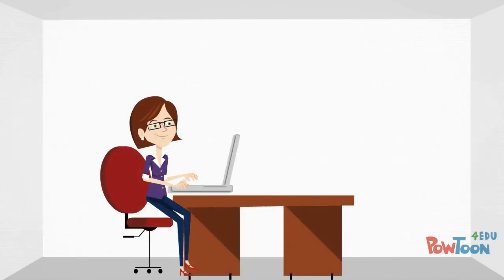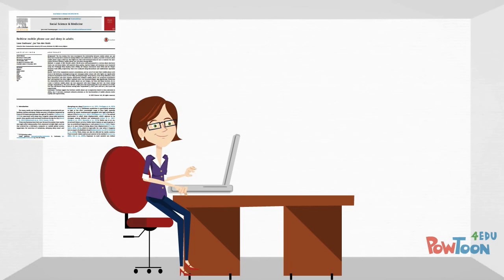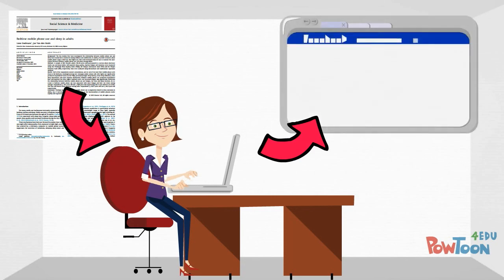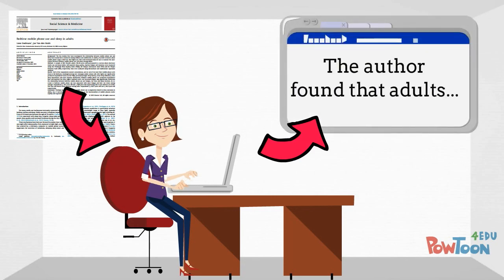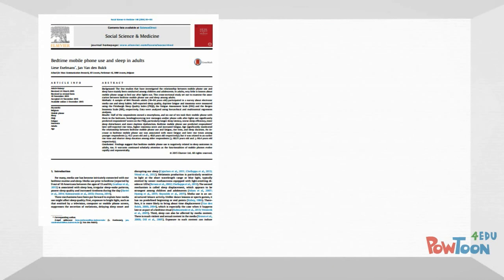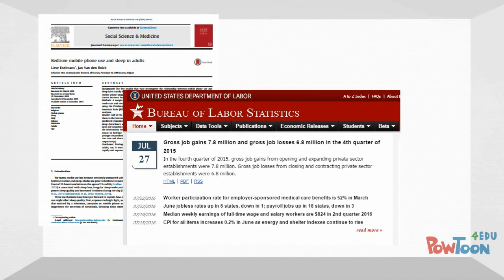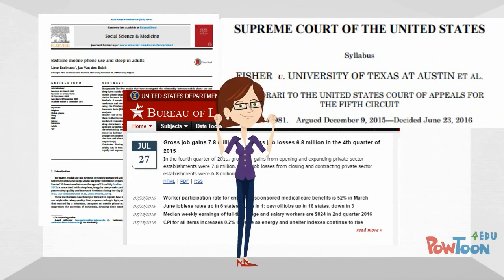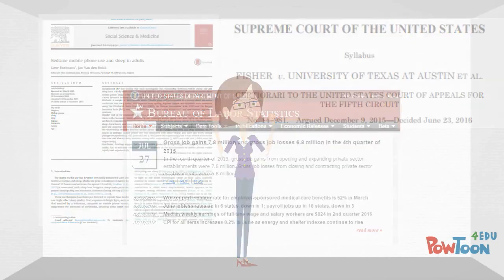Much of the work you produce as a journalist will be considered secondary. You will gather information from primary sources, analyze and interpret these sources, and then report them to the public. By relying on primary sources, you are ensuring that your own work is based on the most factual information available.